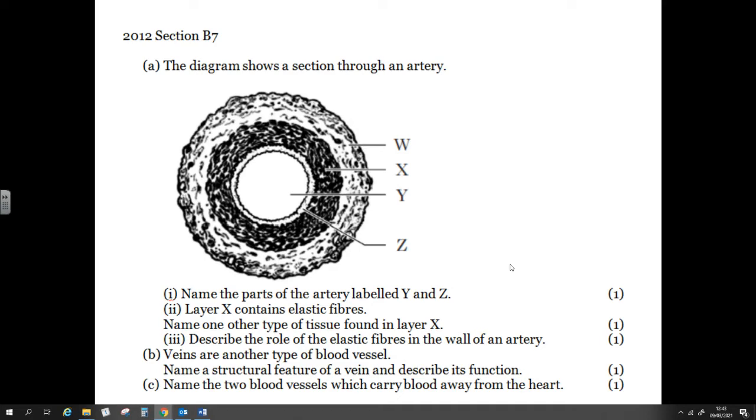Veins are another type of blood vessel, in case you weren't aware. Name a structure found in a vein and describe its function. So you could cheat if you wanted and use the same answer for this question as you used for part three, because obviously the muscular wall of the artery, you also have a muscular wall in the vein. It has a different function. But mainly what they're probably looking for here is valves. So valves prevent the backflow of blood.